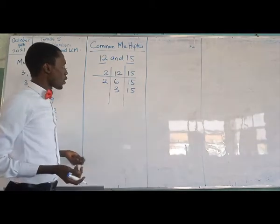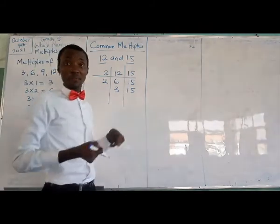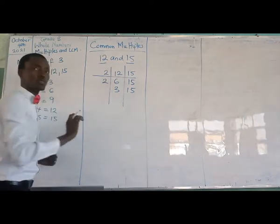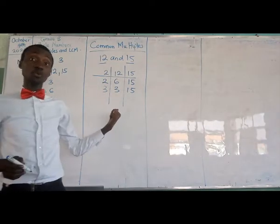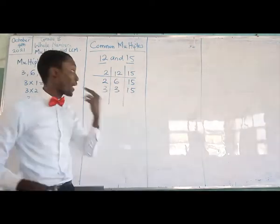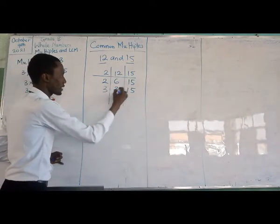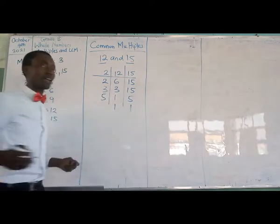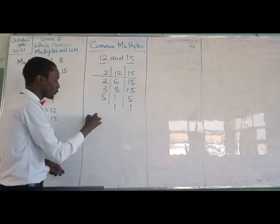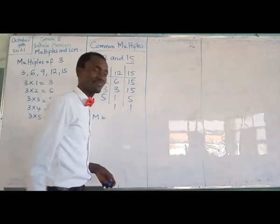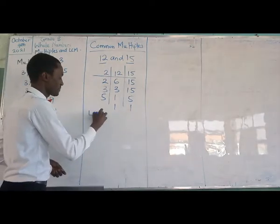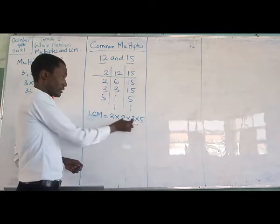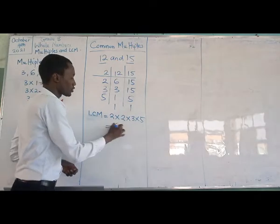Once I've exhausted 2, I check: what's the next prime? I've exhausted 2, I check 3. So the common multiple — you call it LCM. The LCM equals 2 times 2 times 3 times 5, which gives me 4 times 3 = 12, times 5 = 60. So the LCM is 60. When we talk about common factors, the first thing we get is the least common factor. But when we talk about multiples, the first thing we get — which is the least common multiple — is what is of interest to us.